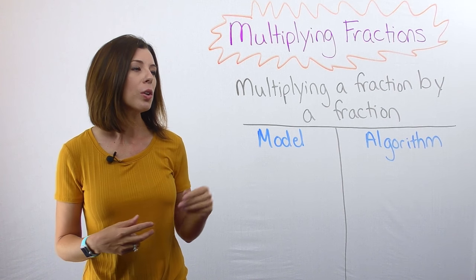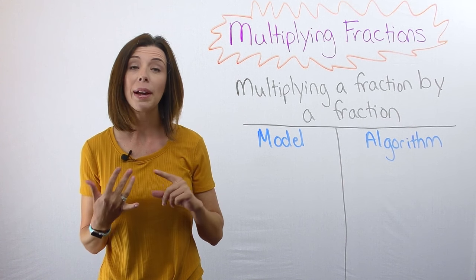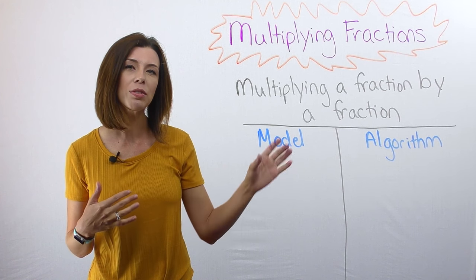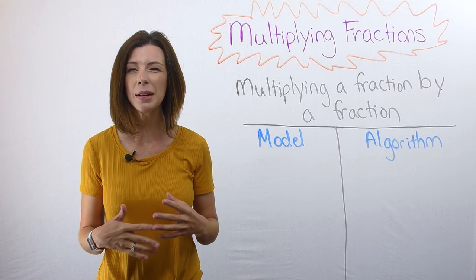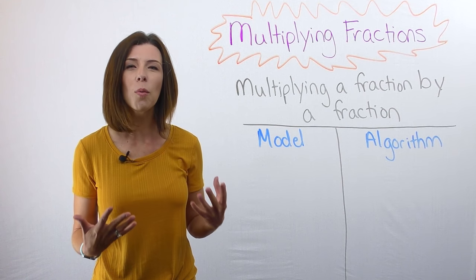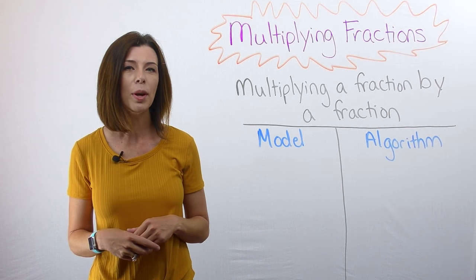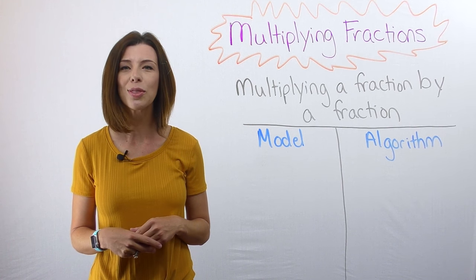Today's video is going to show you how to multiply a fraction by either a fraction or a whole number, and I'm going to compare the model versus the algorithm to see if we can make some sense of why we just multiply straight across. So let's take a look at the problem one-half times two-thirds.